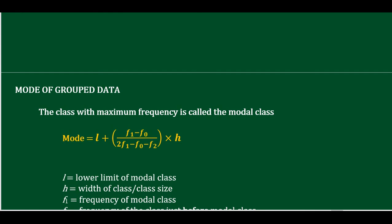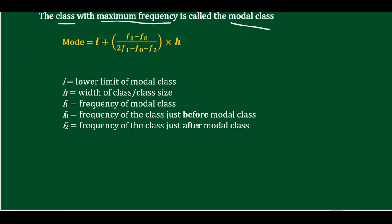Now the mode: the model class is the class with the maximum frequency. The formula for mode is: Mode = L + (F1 − F0) / (2×F1 − F0 − F2) × H, where L is the lower limit of the modal class, F1 is the frequency of the modal class, F0 is the frequency of the class before, and F2 is the frequency of the class after the modal class.